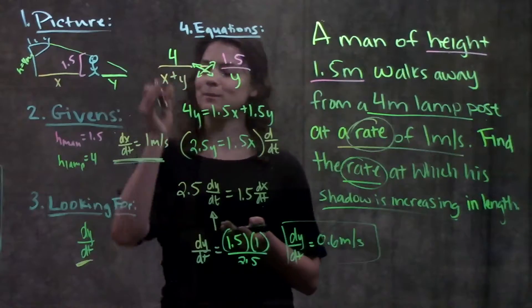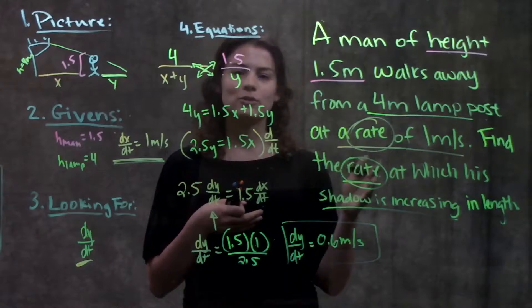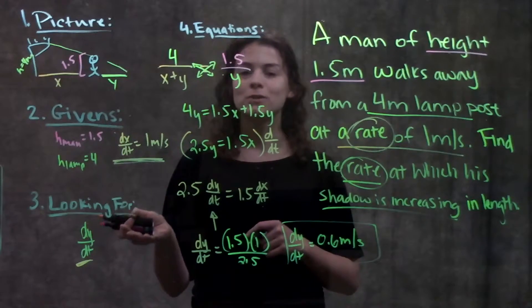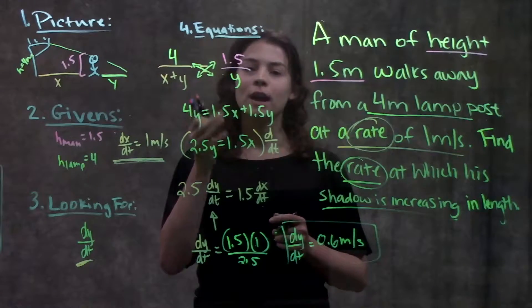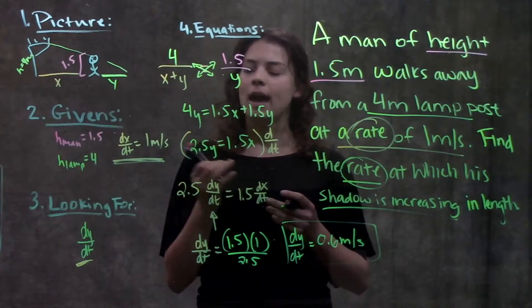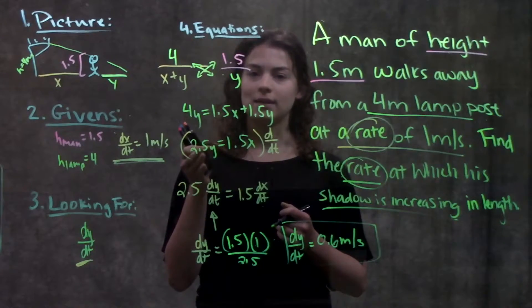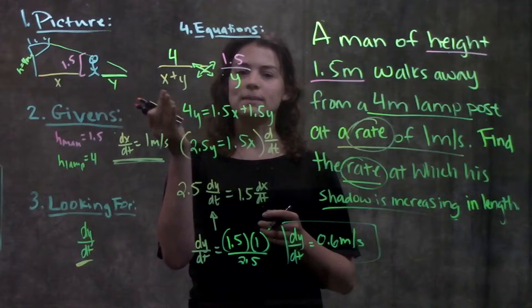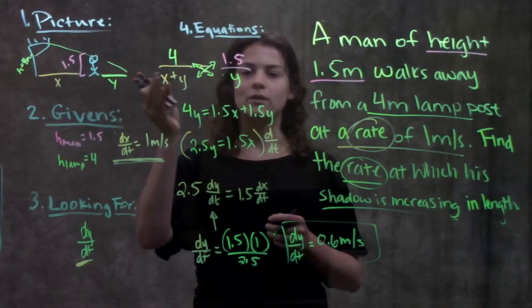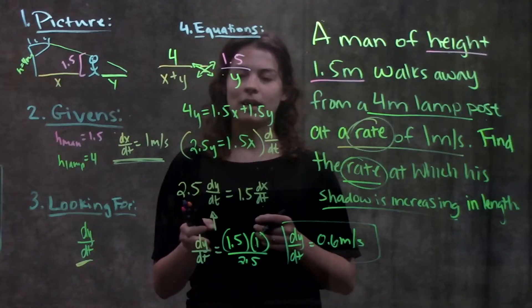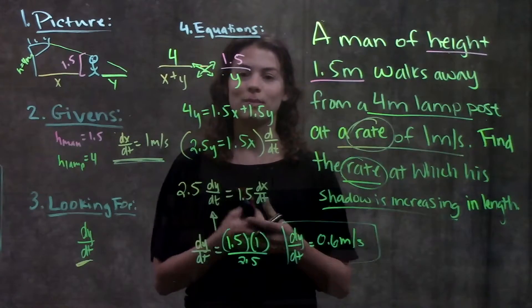So brief recap steps 1 through 3 I just wrote down what they told me in the problem, drew a picture of it, wrote it down in mathematical terms and also wrote down what I was looking for so that in step 4 I knew what kind of equation I needed. Since they're looking for a dy over dt I know that eventually I'll need to take the derivative. So once I made my equation I used my similar triangles to set up a proportion solved it out took the derivative and from there I was able to plug things in and solve for my dy dt.